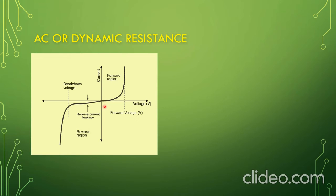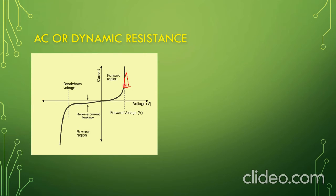If a straight line is drawn tangent to the curve through a chosen point, there is a small triangle region formed. Through this point, a tangent straight line is drawn, and for a particular small change in voltage and current, that tangent can be used to determine the AC or dynamic resistance for that region of the diode characteristics. If we make the voltage and current changes as small as possible, the AC or dynamic resistance value becomes smaller.